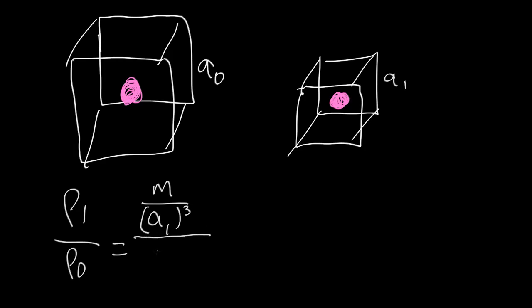Right now, well, the mass is the same in the box, so m is the same. But the volume of the box is a little different. It's a0 cubed. So that means that the density goes as a0 over a1 cubed.